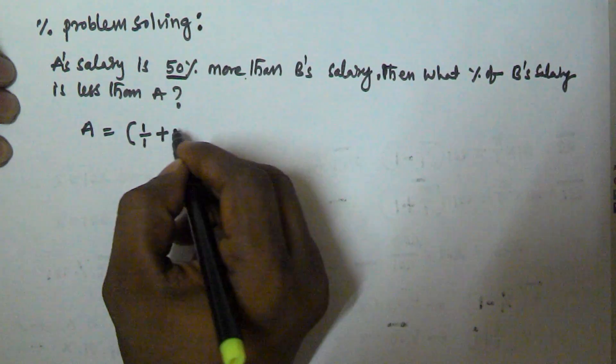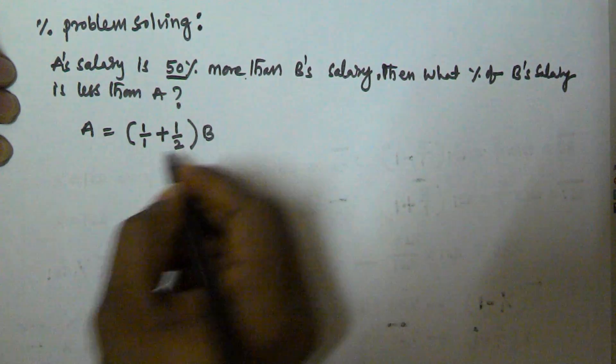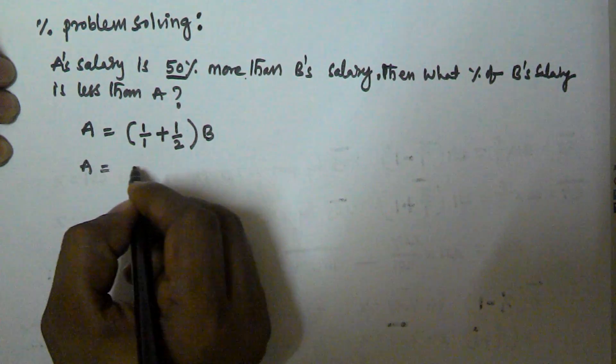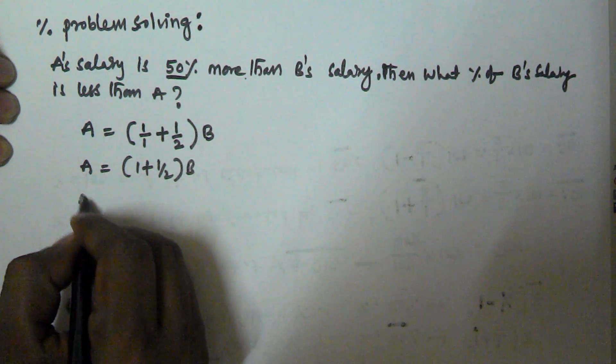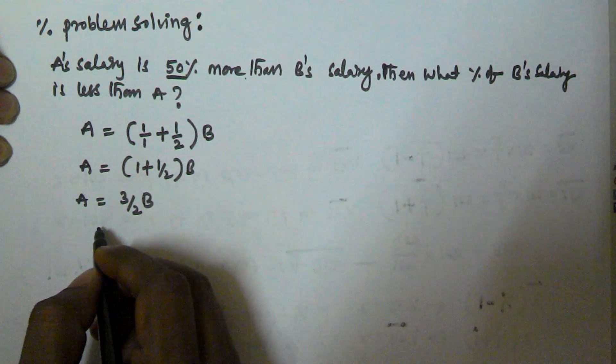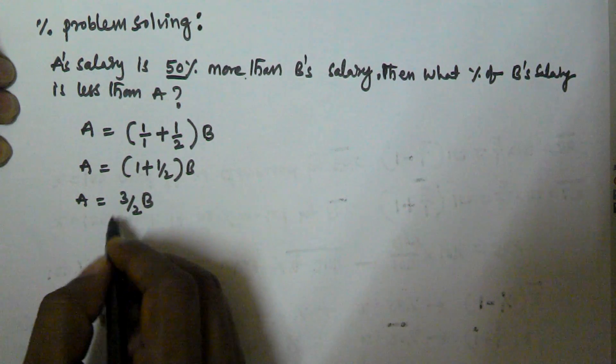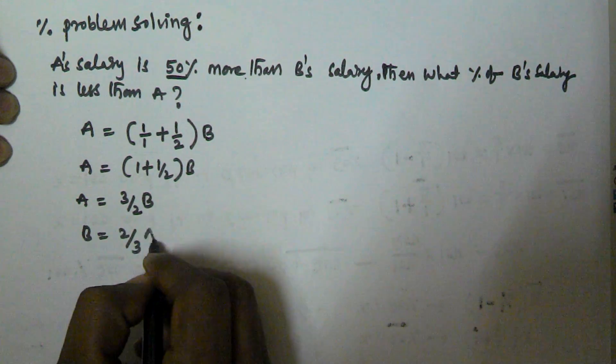So A is equal to 1 plus 1 by 2 into B. A is equal to 3 by 2 of B. Then the same equation can be written as B is equal to 2 by 3 of A.